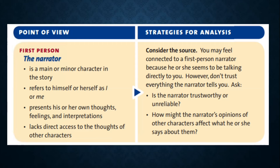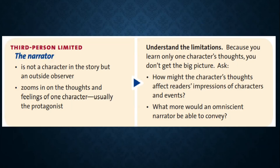Third person limited. This narrator is not a character in the story but an outside observer, who zooms in on the thoughts and feelings of one character — usually the protagonist. Understanding the limitations: because you learn only one character's thoughts, you don't get the big picture. Ask: how might the character's thoughts affect the reader's impression of characters and events?